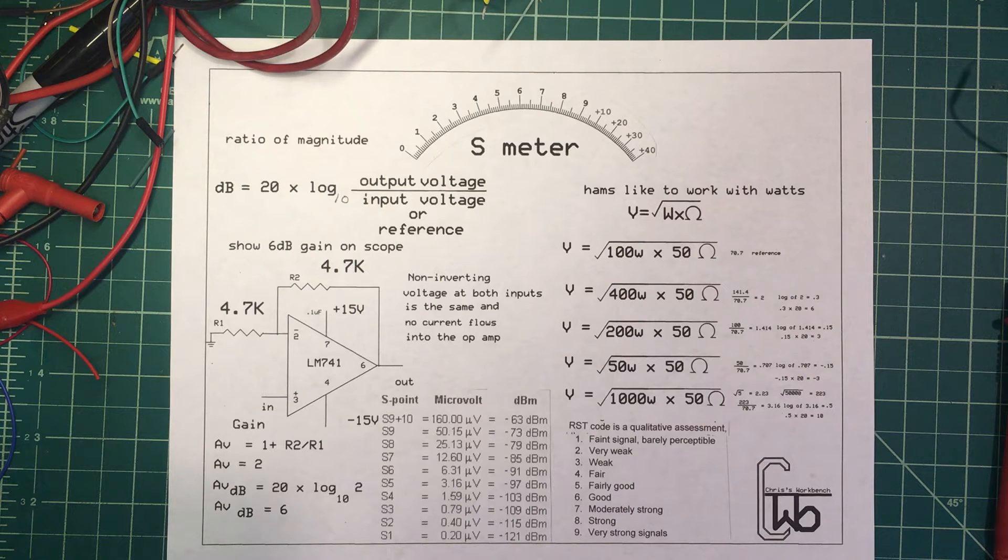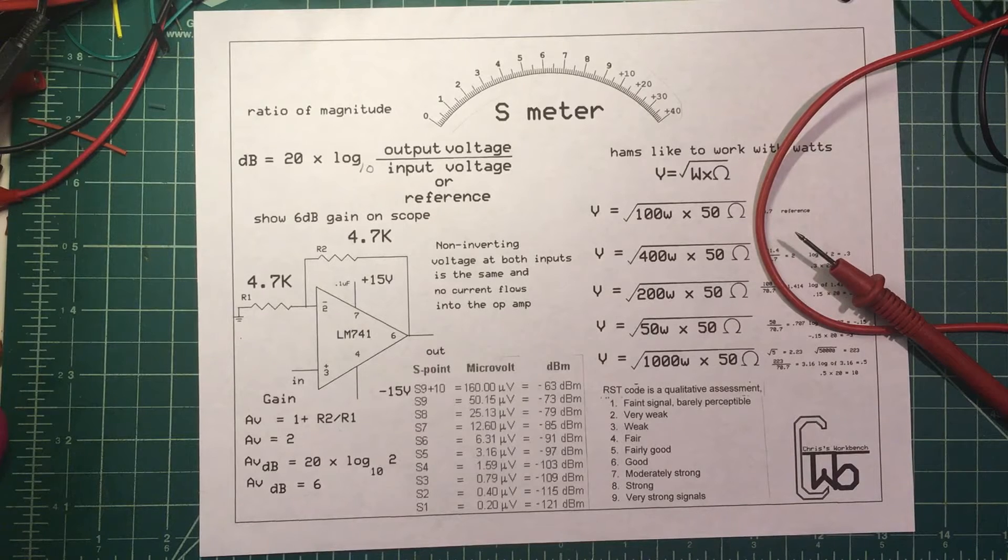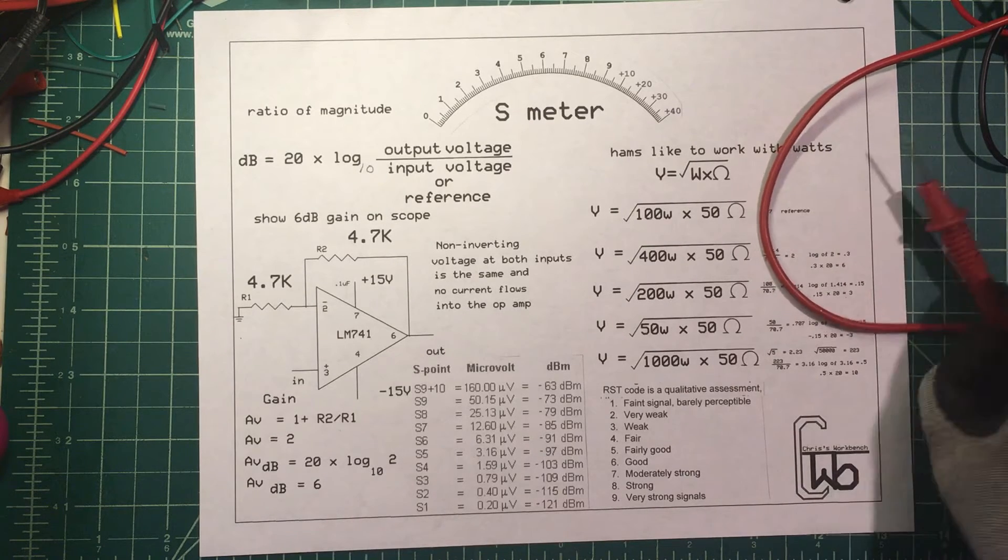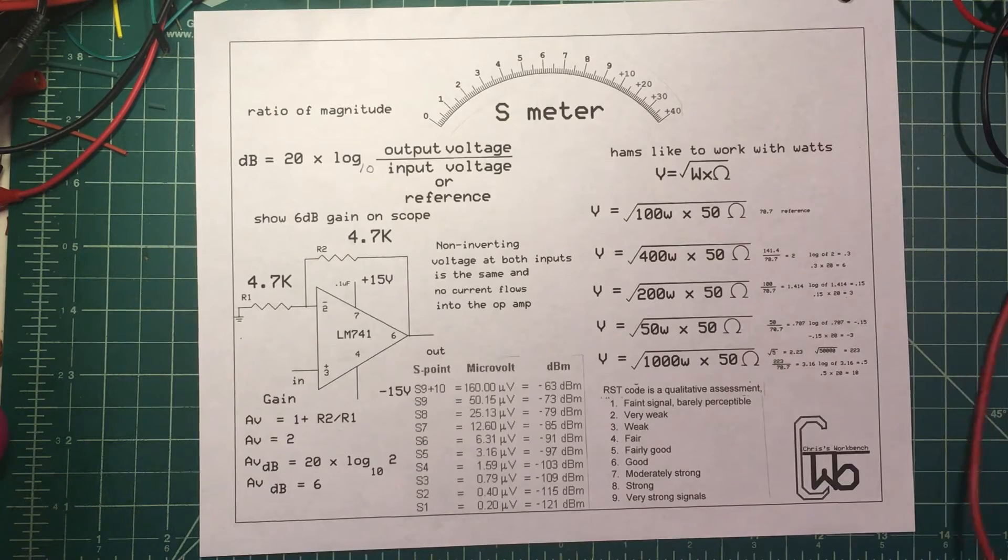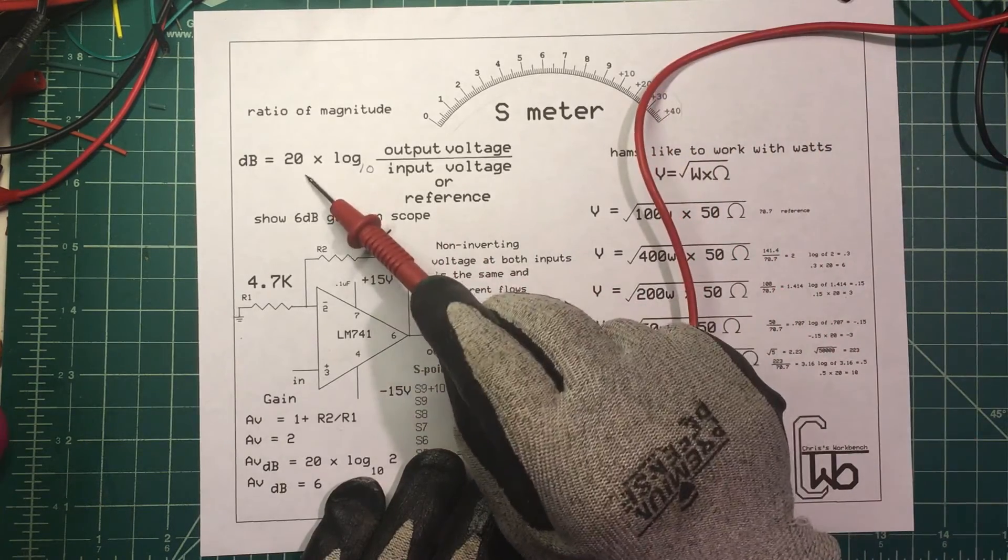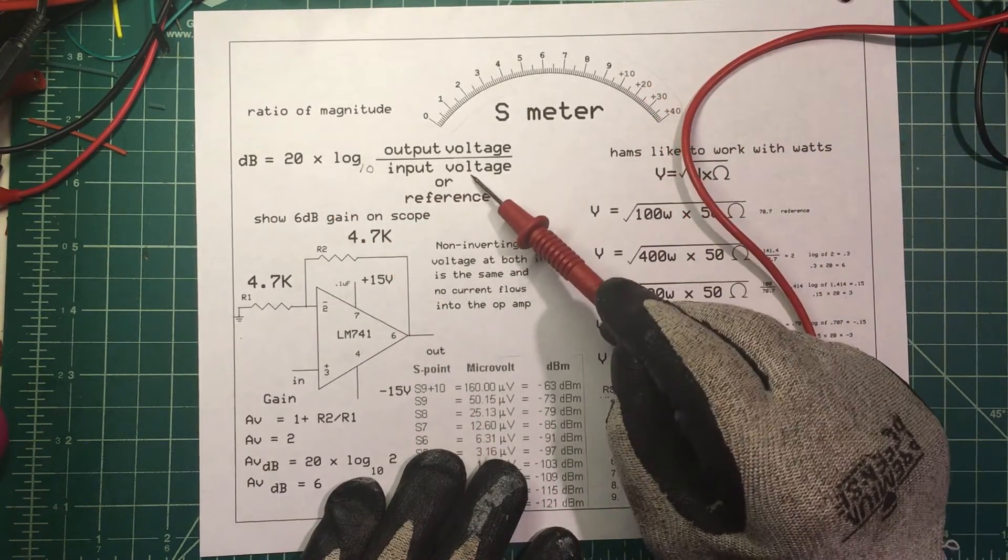Let's talk about an S meter, a signal strength meter. To understand S meters we need to know what a decibel is. We're not going to use it as a unit of sound but as a ratio, and for the most part we use it as a ratio of magnitude or voltage. It's the output voltage over the input or reference value. So the formula is 20 times log base 10 of the output over the input or reference value.